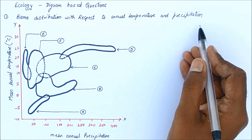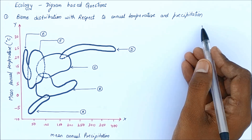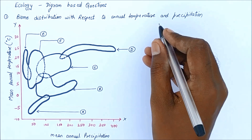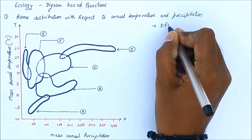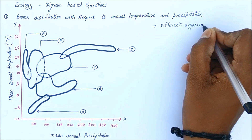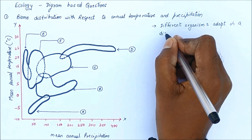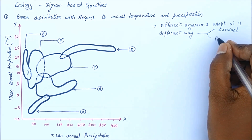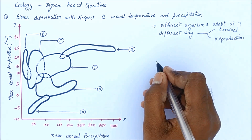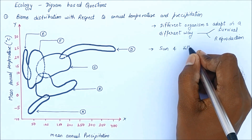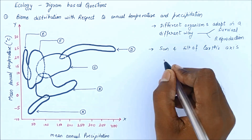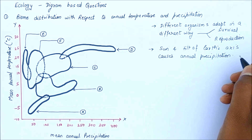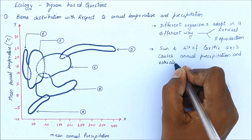These are diagram-based questions which are mostly asked from the ecology chapter. The first question is about biome distribution with respect to annual temperature and precipitation. The diagram will have labels A, B, C, D, E, F, and they might ask you about any one. Different organisms adapt mainly for two things: survival and reproduction. The sun and tilt of the Earth's axis cause annual variation in precipitation and temperature, which together result in different biomes.